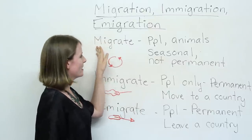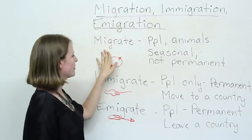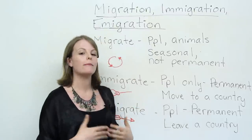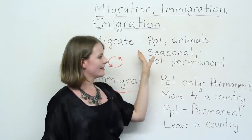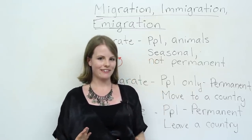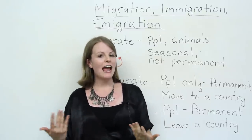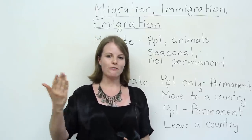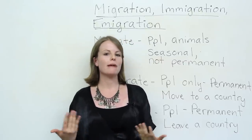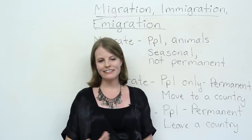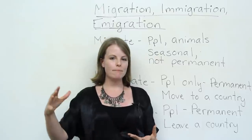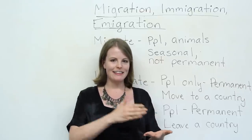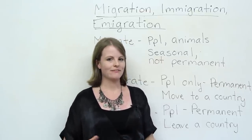So first of all, migrate. Migration is the noun form; migrate is the verb. Migrate has to do with movement — specifically seasonal movement, or movement that is not permanent. A lot of animals migrate. For example, every year, birds fly south to warmer areas for the winter. This is called bird migration. Canadian geese do this, butterflies do this, buffalo do this. Many animals move from one area to another, usually due to temperature, and then at the end of the season, they move back. So migration is not permanent.